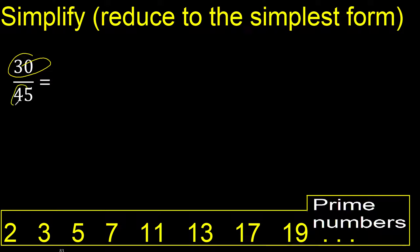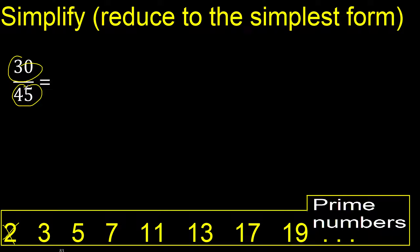30 and 45 cannot be divided by 2 because the last digit is not even. Divided by 3 — yes, 30 and 45 can be divided by 3. 30 divided by 3 is 10, and 45 divided by 3 is 15.